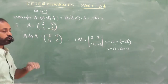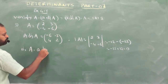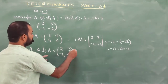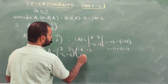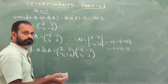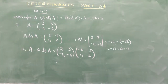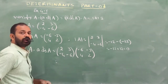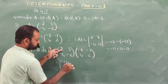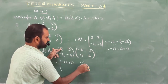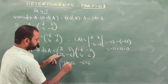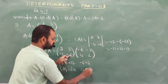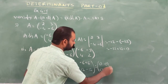Computing A × adjoint A: [2, 3; -4, -6] × [-6, -3; 4, 2] = [2×(-6)+3×4, 2×(-3)+3×2; (-4)×(-6)+(-6)×4, (-4)×(-3)+(-6)×2] = [-12+12, -6+6; 24-24, 12-12] = [0, 0; 0, 0].